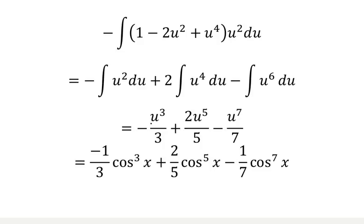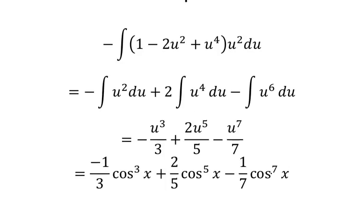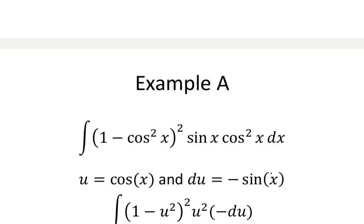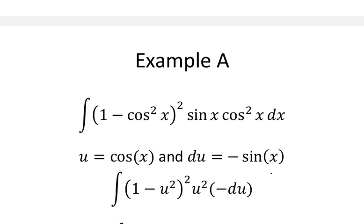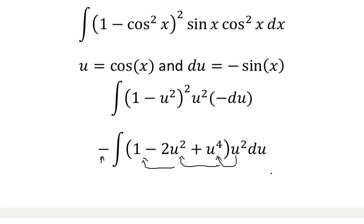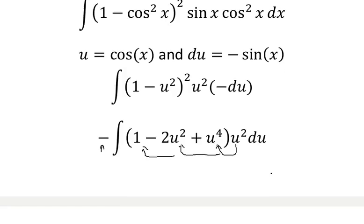Now we go back and undo our substitution of u equals cosine, and we end up with the final expression. The integral has been successfully solved. That's an example of integration using a trigonometric substitution, such as 1 minus cosine squared of x.